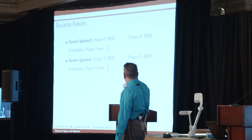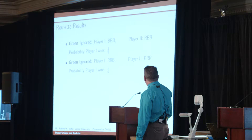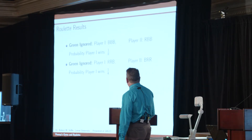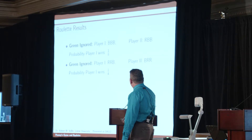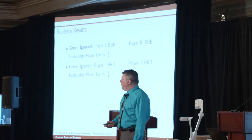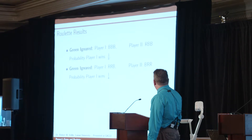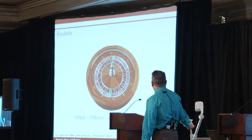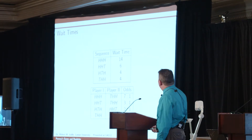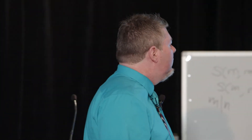The two questions: what's the probability if player one goes black, black, black and player two goes red, black, black — the heads-or-tails equivalent? A second case: red, red, black versus black, red, red. When green is ignored, the probability that player one wins in the first case is one eighth; for red, red, black it's one fourth. These are the exact same odds as with the fair coin, which makes sense — ignoring green gives you two equally likely outcomes.